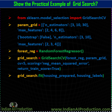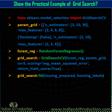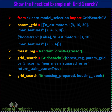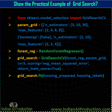Then call the GridSearchCV class and pass the variables you have created — forest_reg and param_grid — along with the cross-validation value. Here we are using 5. You can use any scoring parameter; we are providing negative_mean_squared_error and setting return_train_score equal to True.